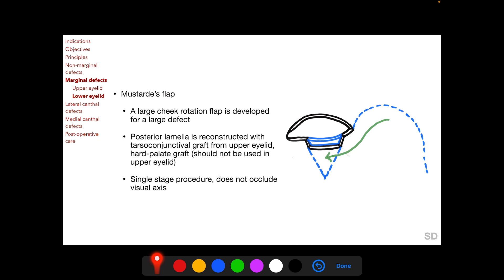As an alternative for repair of a large lower eyelid defect, a Mustardé flap can be used. A Mustardé flap is a large rotation flap from the cheek which is developed and advanced to provide for the anterior lamella of the defect in the lower eyelid. The posterior lamella of the defect is reconstructed with a tarsoconjunctival graft from either the ipsilateral or contralateral upper eyelid, or alternatively a hard palate graft can be used. A hard palate graft should not be used in the upper eyelid because of its rough inner surface, which can cause ocular damage.